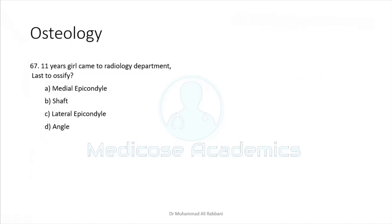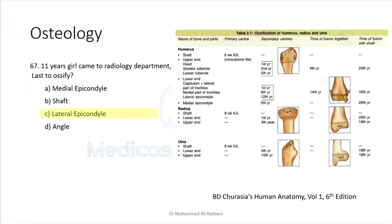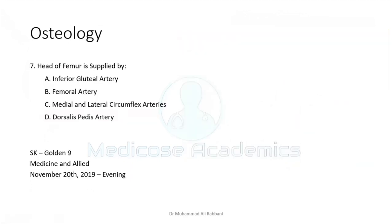An 11-year-old girl comes to radiology — which structure is last to ossify? You can identify these from past papers. The ossification center appearing last is at the lateral epicondyle, in the 12th year. The medial epicondyle appears in the 9th year. The shaft appears earlier as the primary ossification center, even in intrauterine life. There is actually no angle of the humerus, so the answer is the lateral epicondyle.